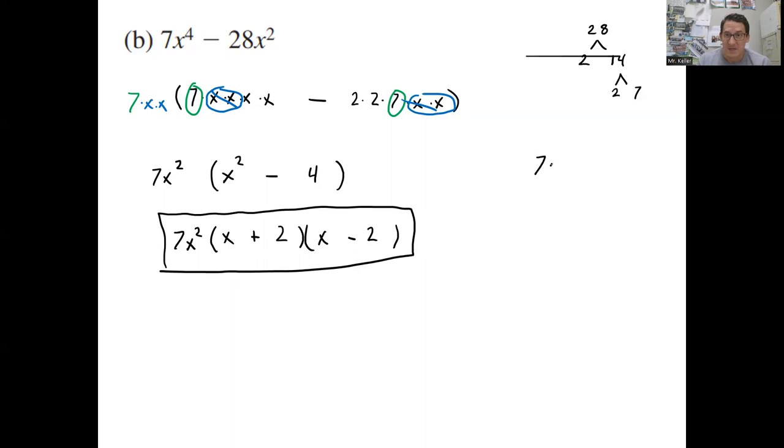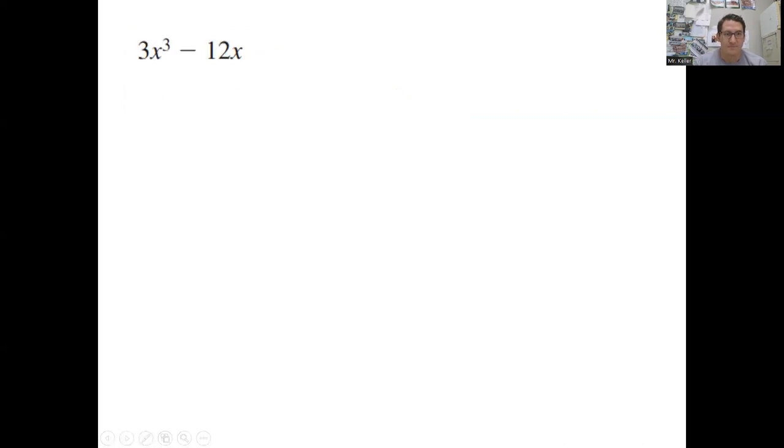Let me just kind of do the factor tree so we can see what happened here. So this whole thing, our first layer of factoring is the 7x squared and then x squared minus 4. And then this continued to factor down here as x plus 2 times x minus 2. And so we have this two layers of factoring, kind of like how the 28 has the two layers of factoring. That's where all that's coming from.